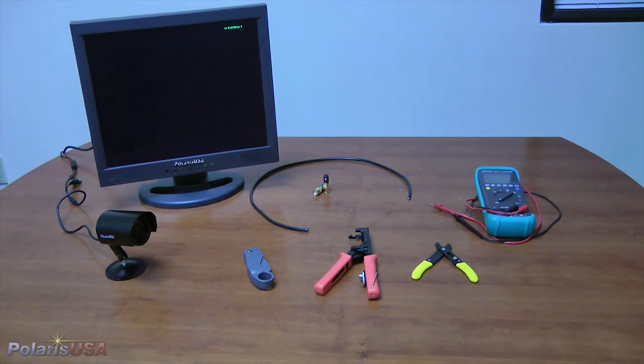In addition to the raw cable and connectors, you will also need a compression tool, a coaxial cable stripper, a pair of wire cutters, and a multimeter or continuity checker. I also recommend having a test monitor and camera setup to check your cables before installing them. All of these tools can be purchased from our website at PolarisUSA.com.